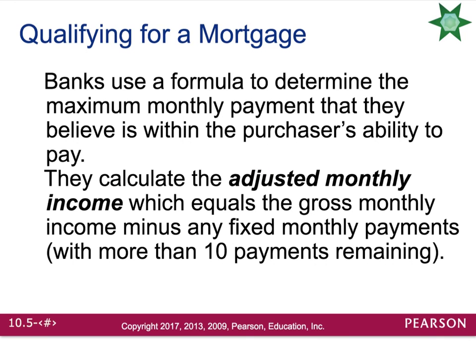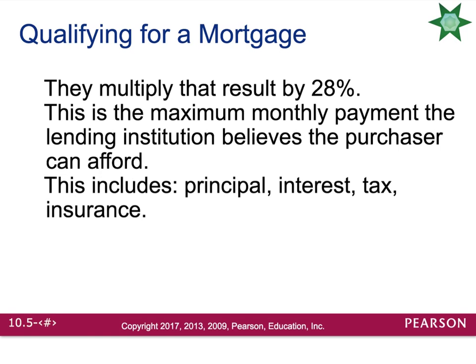Qualifying for a mortgage: banks use a formula to determine the maximum monthly payment that they believe is within your ability to pay. They calculate the adjusted monthly income — this is how much total money you bring in minus any fixed monthly payments such as student loans or car payments. They take that adjusted amount and multiply it by 28%, which is what they feel is the maximum monthly payment you will be able to afford. This payment needs to include the principal of the mortgage, the interest charged, the taxes you will owe the government, and the insurance required on your home.